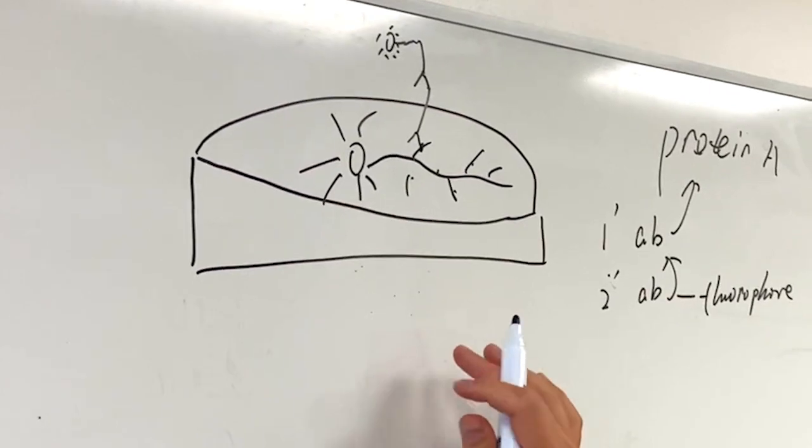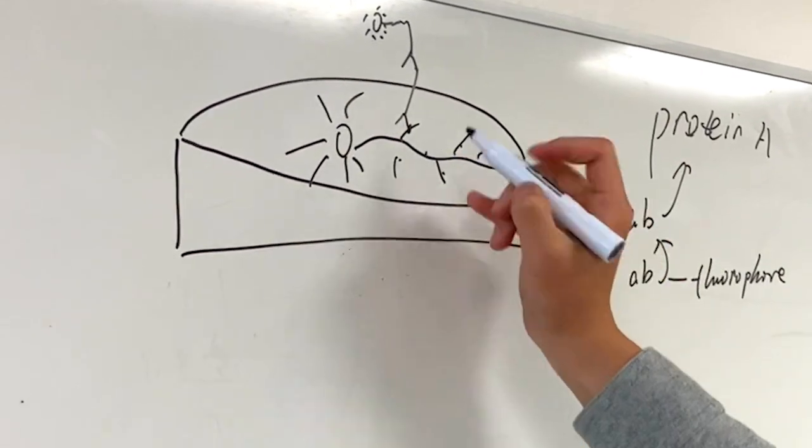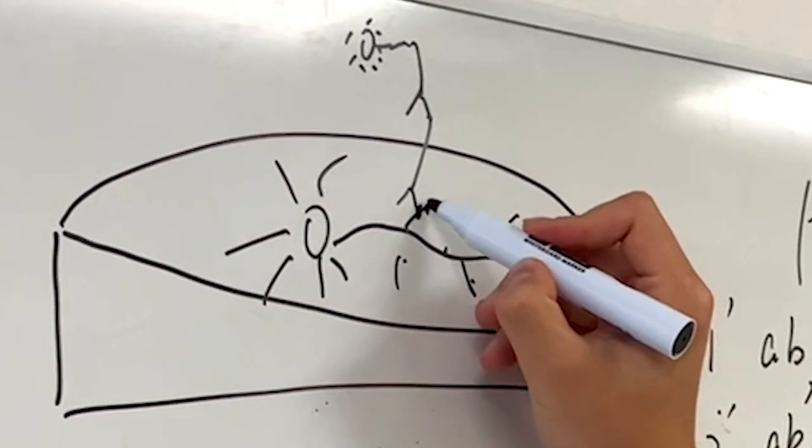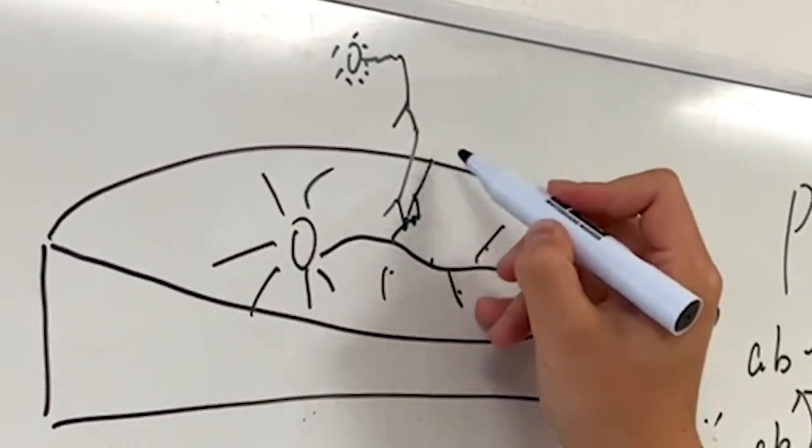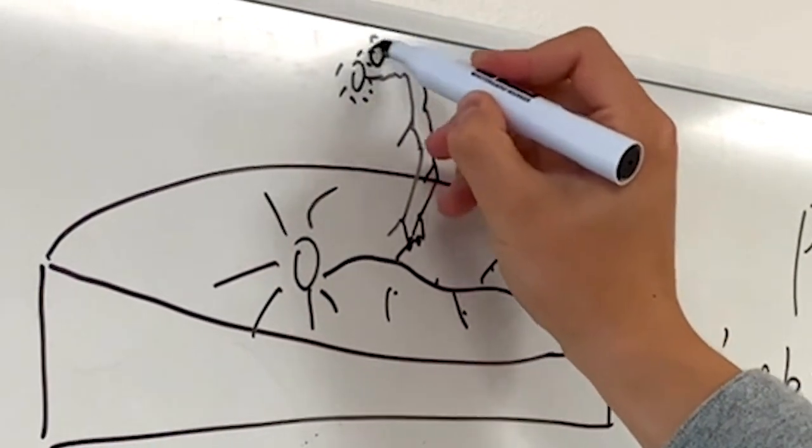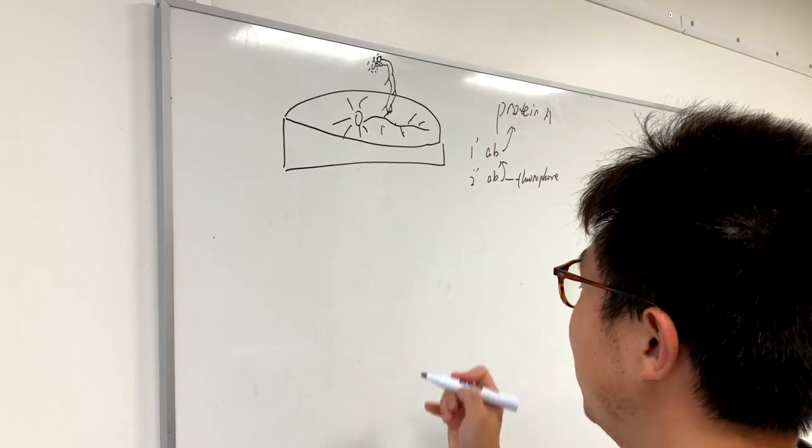Now, this is all very well and good, but the problem is when you have two copies of protein A that are very close to each other, then you would get labels that are very close to each other. In that case, you have two fluorophores that are very close to each other.